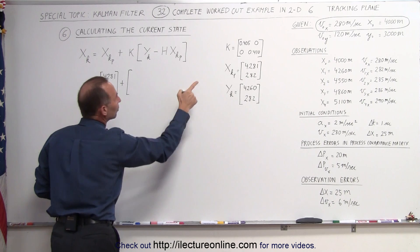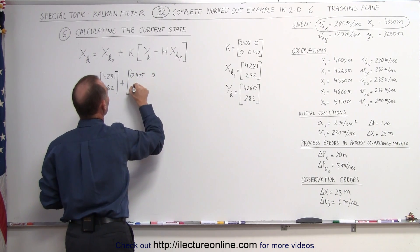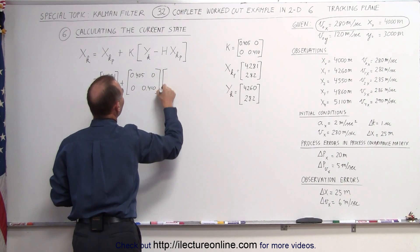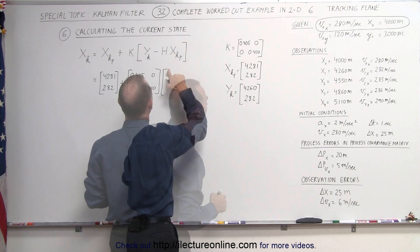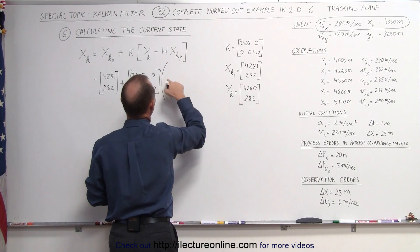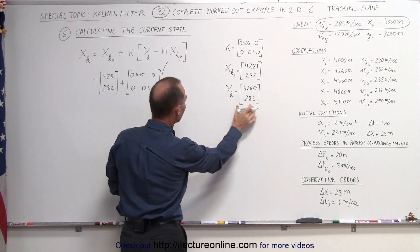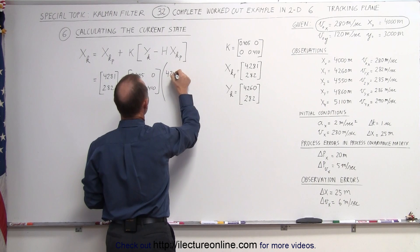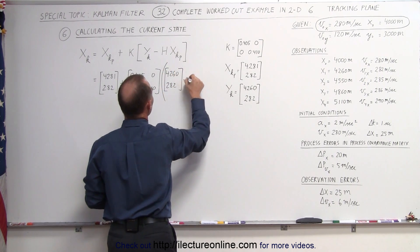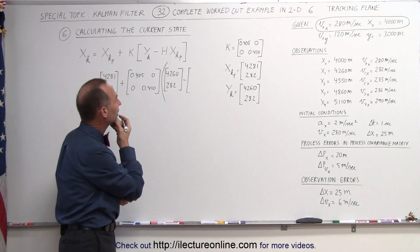We had a predicted position of 4,281 meters and a predicted velocity of 282 meters per second. We added that to the Kalman gain, which is equal to 0.405 and 0.410 multiplied times the observed values. Maybe I'll go ahead and put a parenthesis here because we're going to multiply times the difference between these two.